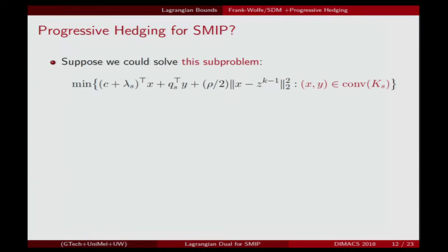The key observation — which also appeared in earlier papers and helped motivate us — is that if you ran this progressive hedging algorithm and could solve the subproblem by optimizing over the convex hull of the mixed integer set rather than the set itself, then this becomes a convex program and would converge to the Lagrangian dual. This is the key subproblem you'd like to solve within the progressive hedging algorithm.